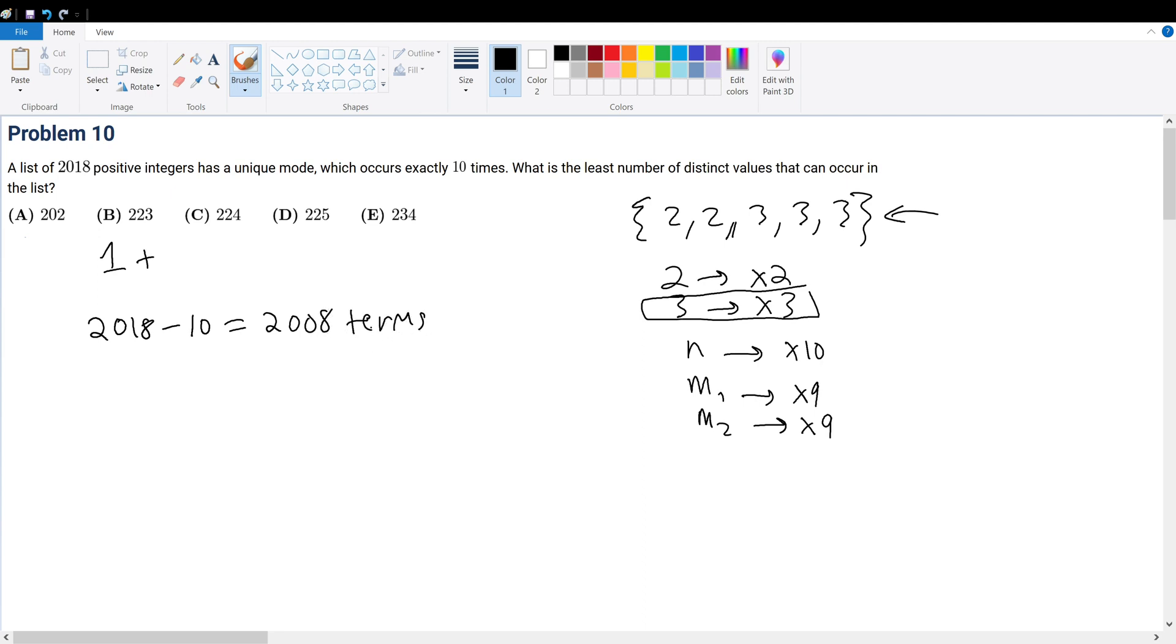And each of the 2,008 terms, each term occurs 9 times. So, how many unique terms do we have? Well, we have 2,008 divided by 9 and we have to take the floor function to get that quantity. So, 2,008 divided by 9, what is that?